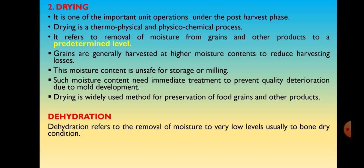If the grains are stored in a storage structure with high moisture content, spoilage of the grains occurs during the storage period, and it also becomes difficult to process the grain in a processing plant. Such moisture content needs immediate treatment to prevent quality deterioration due to mold development. Drying is a widely used method for preservation of food grains and other products. Dehydration refers to the removal of moisture to a very low level, usually to bone dry condition.